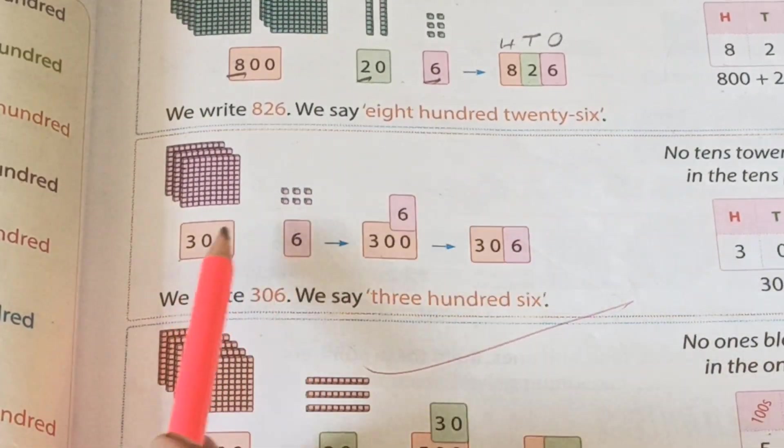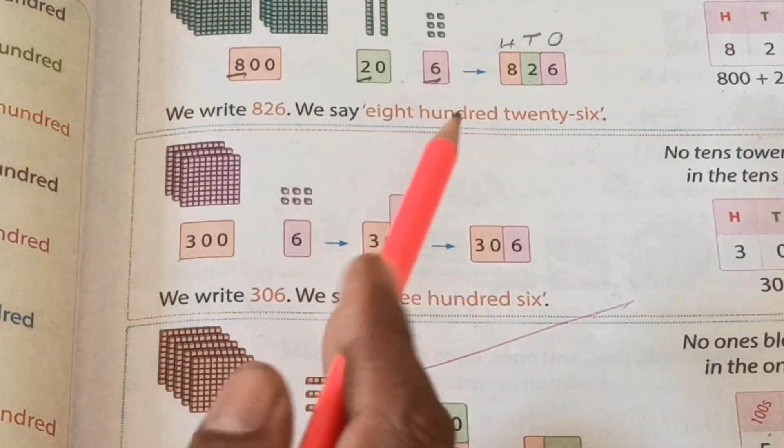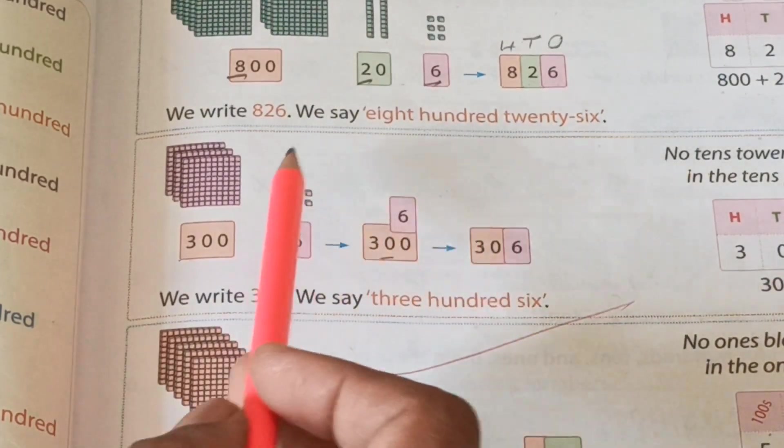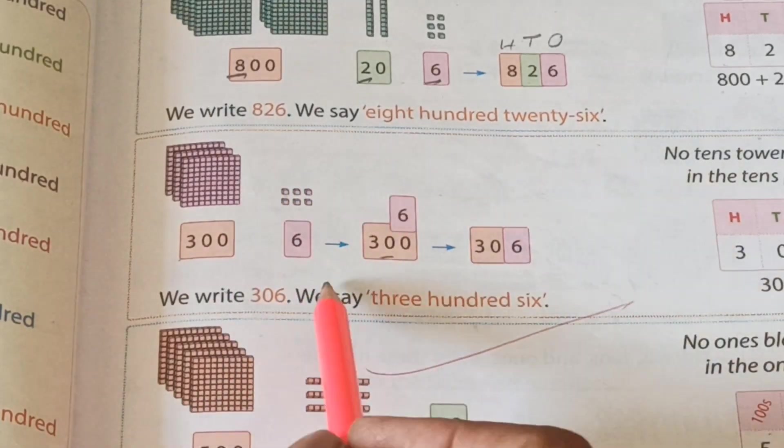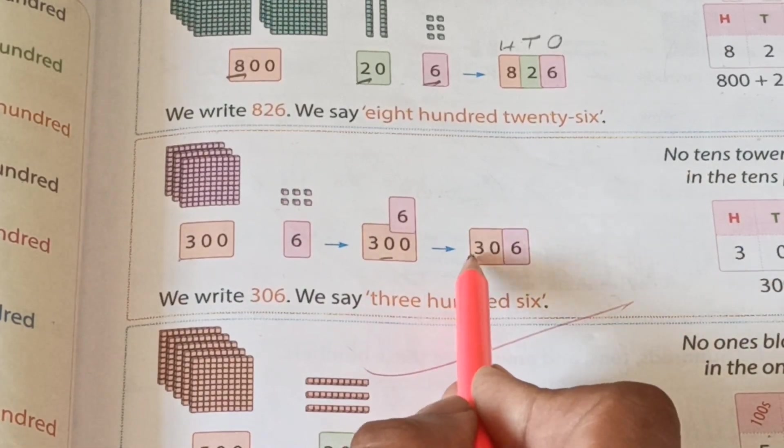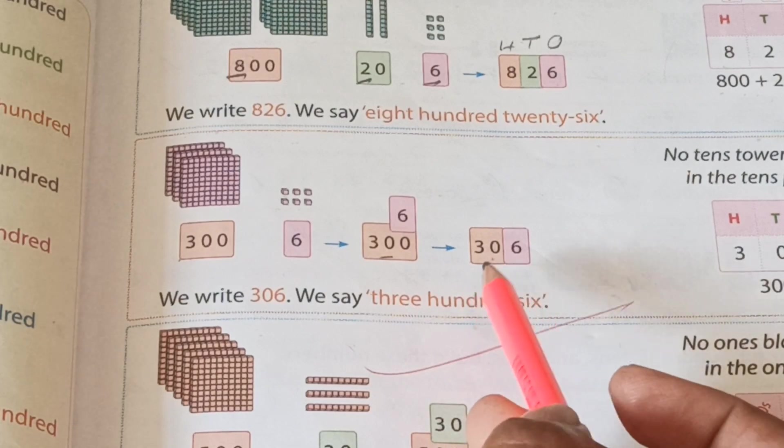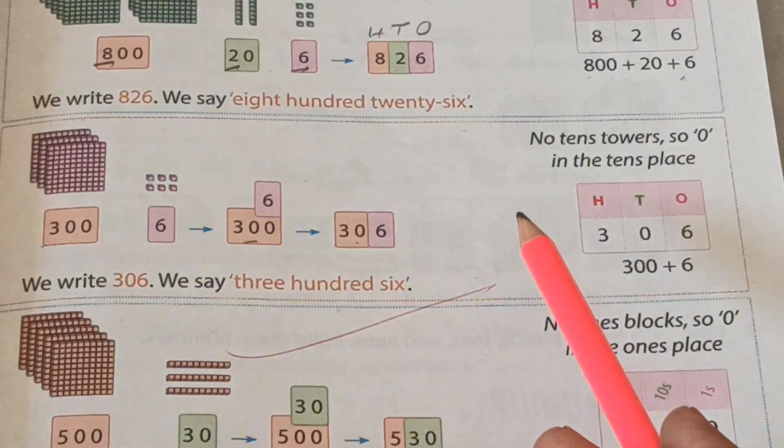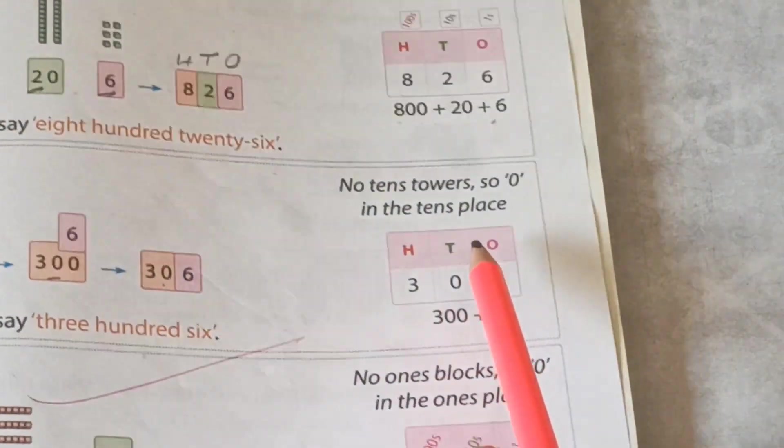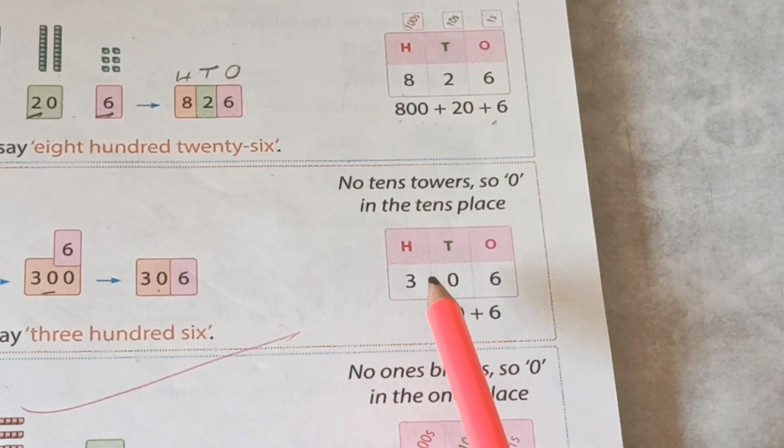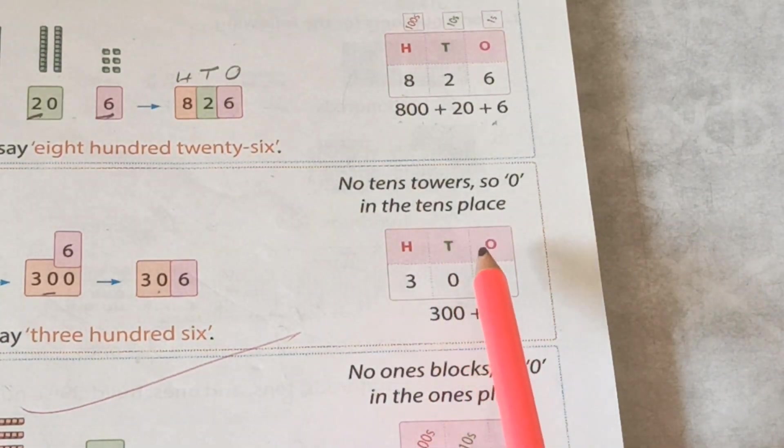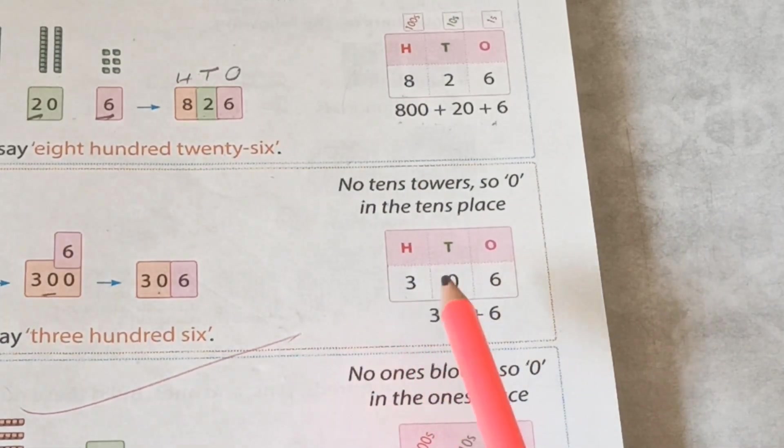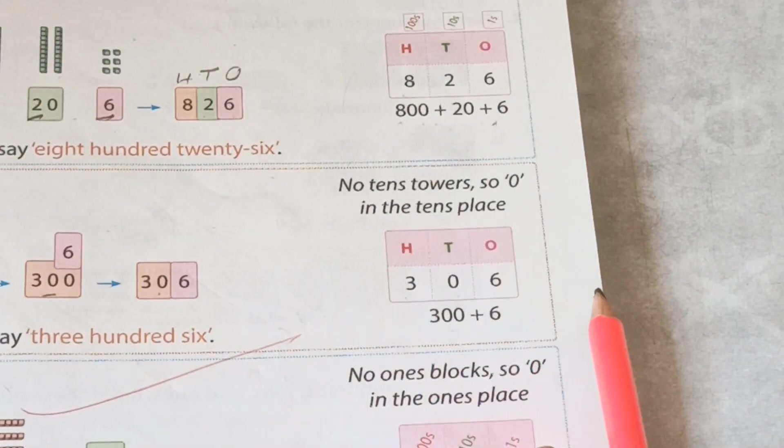300 and 6. But here we can't see tens, so we write there 0, because there are 0 tens here. 0 means nothing. So we write 3, 0, and 6. How do we form hundreds, tens, ones place? 6 ones. How many tens? 0, means nothing, because no tens towers, so 0 in the tens place. And hundreds place 3. Then we get our number 306. I hope you understood.